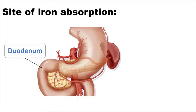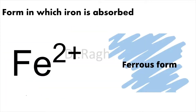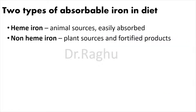Iron is majoritily absorbed from the duodenum. Iron is usually absorbed in the Fe2+ form, which is the ferrous form. There are two types of absorbable iron in the diet: heme iron and non-heme iron. Heme iron is derived directly from animal sources and is easily absorbed, whereas non-heme iron comes from plant sources as well as fortified products, and is not as easily absorbed.